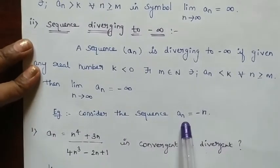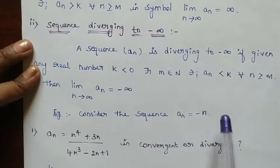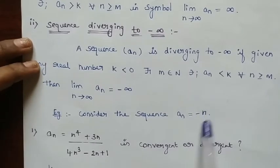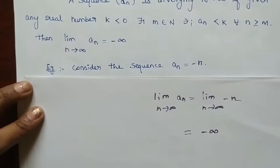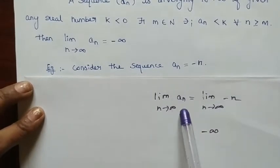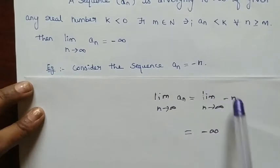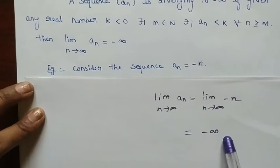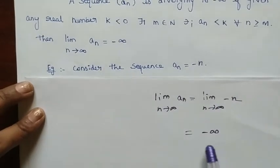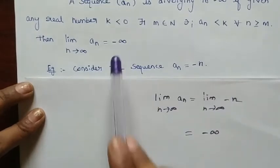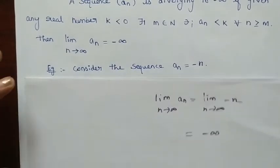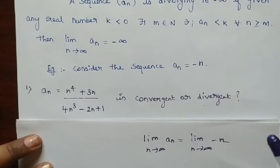They give an example: consider the sequence AN equal to minus N. On applying the limit, limit N tends to infinity of AN equals limit N tends to infinity of minus N, which gives minus infinity. So the Nth term diverges to minus infinity, and we can say the sequence is diverging to minus infinity.